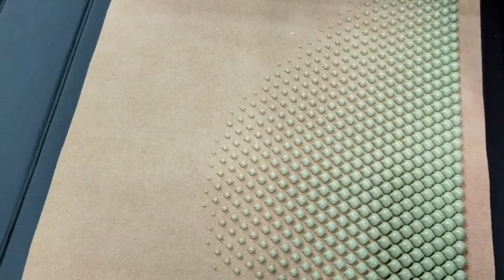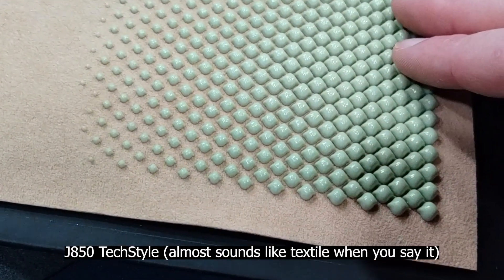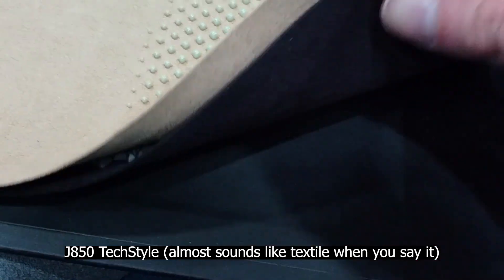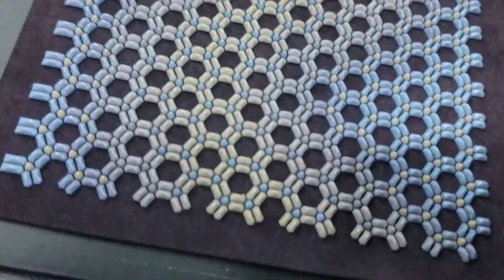The Stratasys 3D printer that makes this possible is called the J850 PEC Style, and it lets you print designs directly onto fabrics in full color with transparencies and detailed textures.